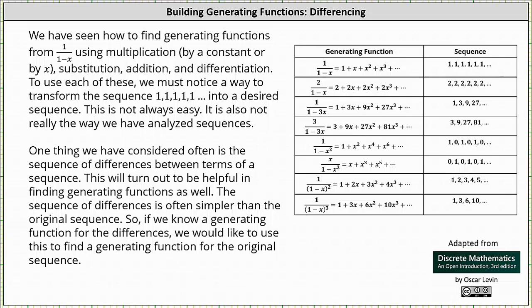Welcome to a lesson on building generating functions for sequences using the technique of differencing. We have seen how to find generating functions from one divided by the quantity one minus x, using multiplication, substitution, addition, and differentiation. To use each of these, we must notice a way to transform the sequence of ones into a desired sequence, because the generating function of the sequence of ones is one divided by the quantity one minus x. This is not always easy, and it's not really the way we have analyzed sequences. One thing we have considered often is the sequence of differences between terms of a sequence, which will turn out to be helpful in finding generating functions as well.